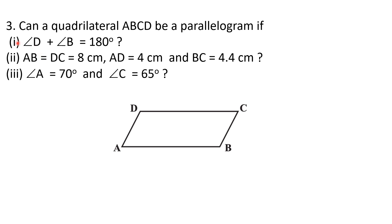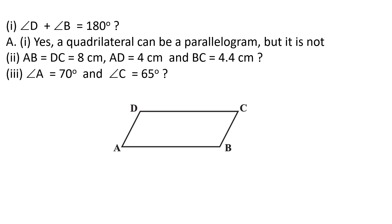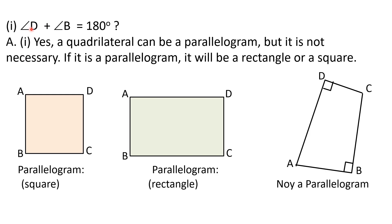This naming convention is very important; otherwise, if you name the parallelogram wrongly, you are likely to make mistakes. Now let us do all three parts in detail one by one. For part one, condition: angle D plus angle B equals 180 degrees. The answer is yes, a quadrilateral can be a parallelogram, but it is not necessary. I will show both cases — where it is possible and where it is not.